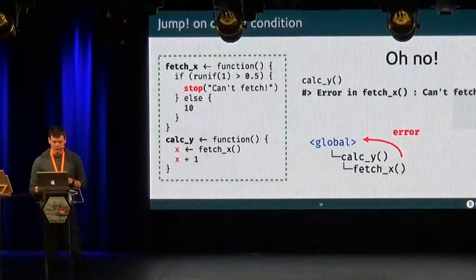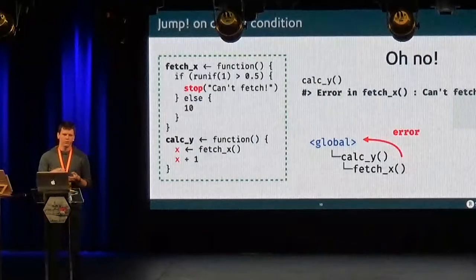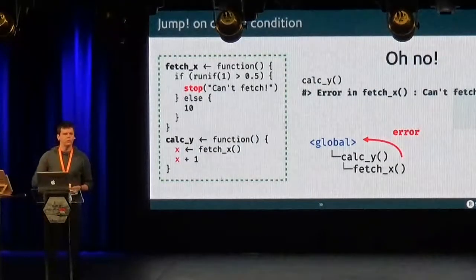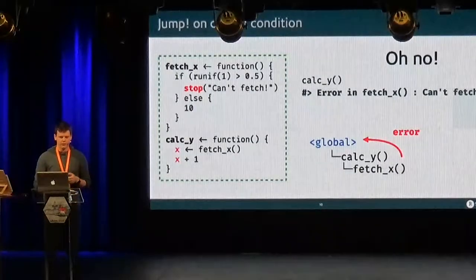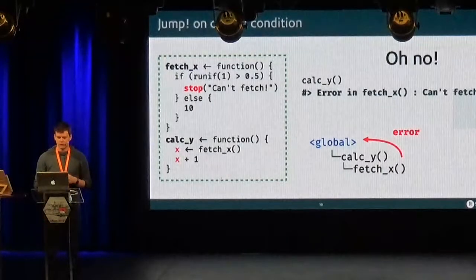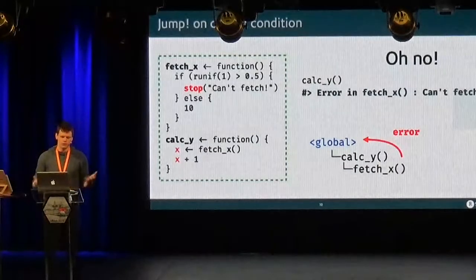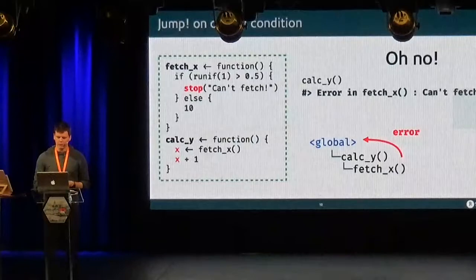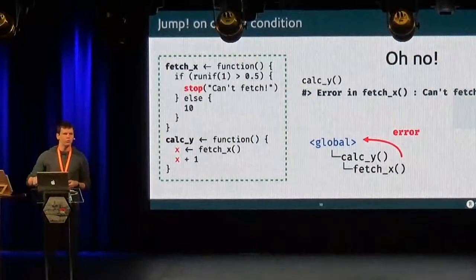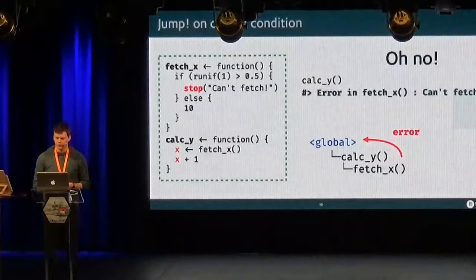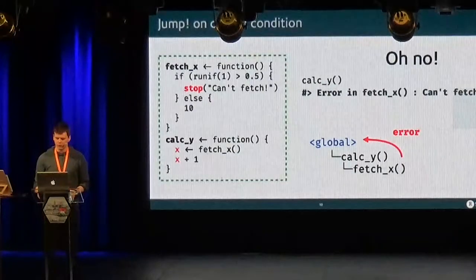And when there is an error, actually, you have to make a shortcut, you have to jump. Because if we cannot compute the value from fetchX, then it doesn't make sense for calcY to continue running. It doesn't know what to do. And so the only sane thing is to jump to the global environment. So this is usually what an error is about.